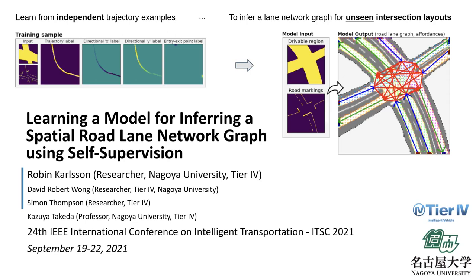Good day and thanks for taking your time to listen to our presentation. My name is Robin, a researcher at Nagoya University and a Tokyo-based company called Tier 4. In this talk, I will present our new self-supervised method that learns from single trajectory examples how to generate a road lane network graph for completely new road layouts without requiring any human label annotation.